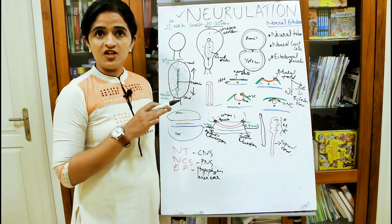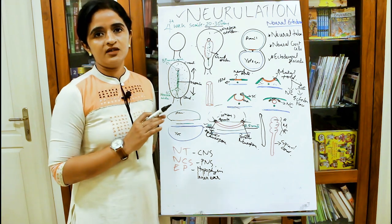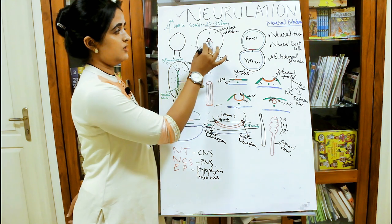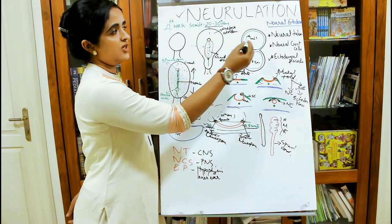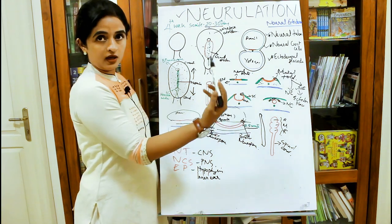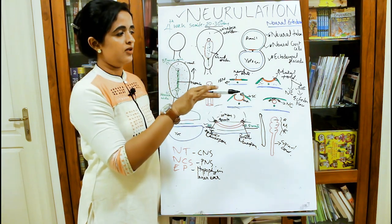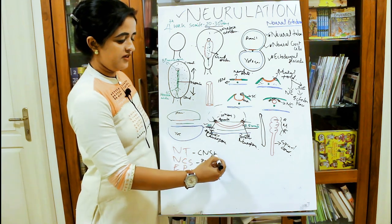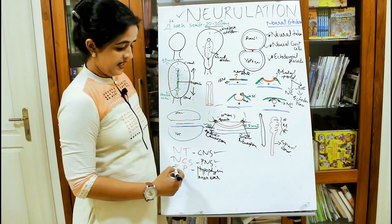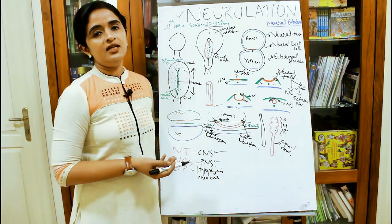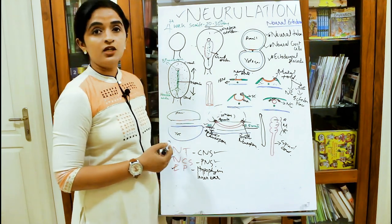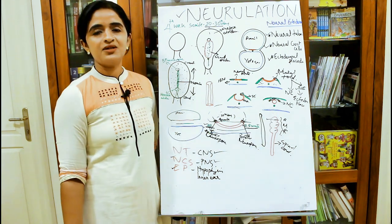This is neurulation — one of the main events of the fourth week of intrauterine period. In summary: the neuroectoderm differentiates from ectoderm and gives rise to the neural tube, which forms the entire central nervous system. Neural crest cells give rise to the peripheral nervous system. Ectodermal placodes give rise to structures like the hypophysis and the inner ear. In coming sessions, we'll cover neural crest cell derivatives, brain vesicle development, and spinal cord development in detail.